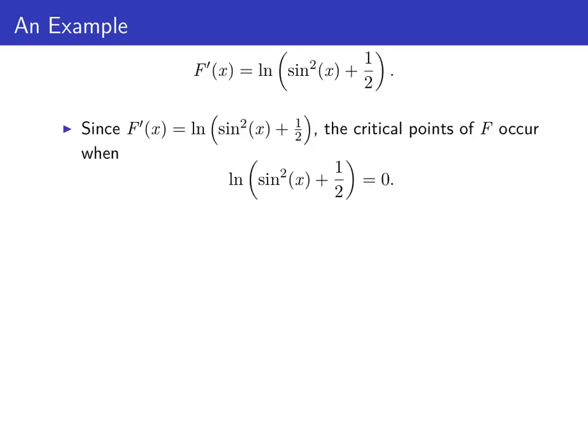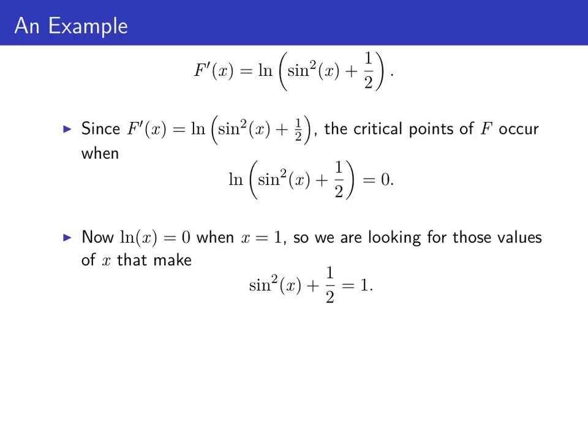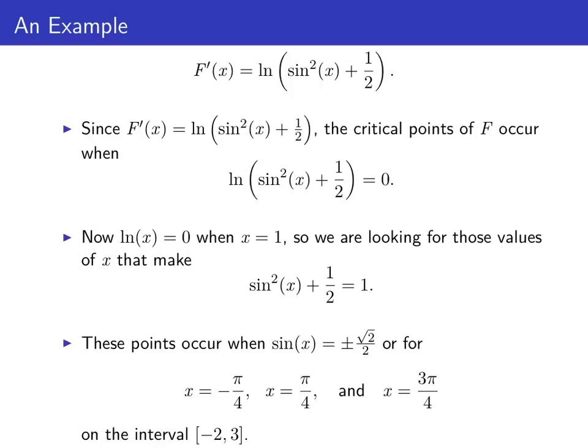F' is the log of sine squared x plus one-half, and since sine squared x plus one-half is never less than one-half, F' is defined everywhere. The only critical points of F occur when the log of sine squared x plus one-half equals zero. A log is zero only when its argument is one, so we need sine squared x plus one-half equal to one, meaning sine x equals plus or minus root two over two. On the interval from negative two to three, that happens at x equals negative π/4, x equals π/4, and x equals 3π/4.